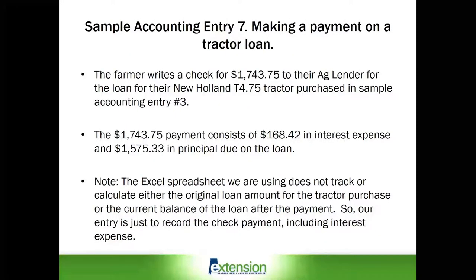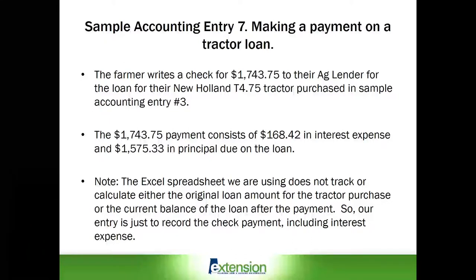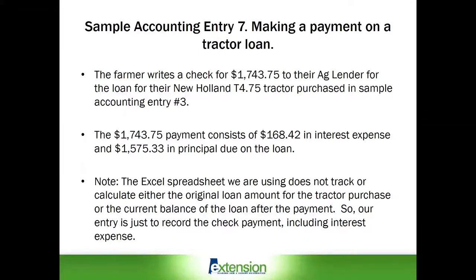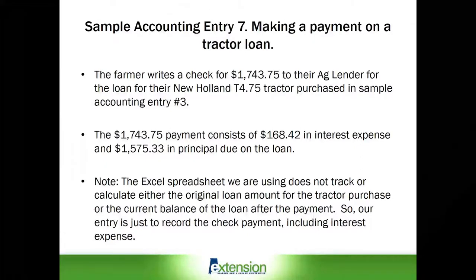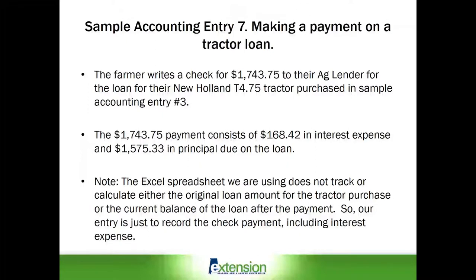In this sample entry, the farmer writes a check for $1,743.75 to their ag lender for the loan on their New Holland T4.75 tractor, purchased in sample accounting entry number three. The $1,743.75 payment consists of $168.42 in interest and $1,575.33 in principal due on the loan.